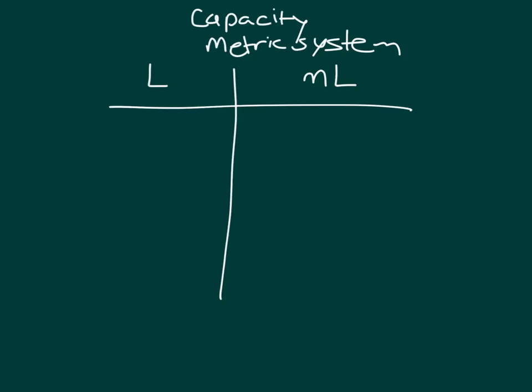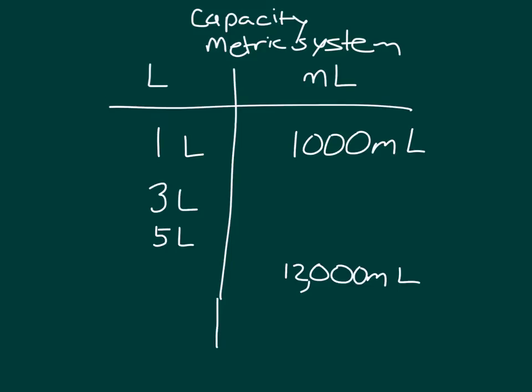We have this table and chart for capacity within the metric system. We have liters and we have milliliters. Remember that one liter does equal 1,000 milliliters. If that's the case, can you complete the rest of this table? Copy the chart, pause the video, and work to complete it.